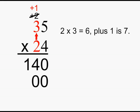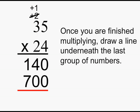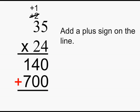2 times 3 is 6, plus 1 is 7. Once you are finished multiplying, draw a line underneath the last group of numbers, and add a plus sign on the line.